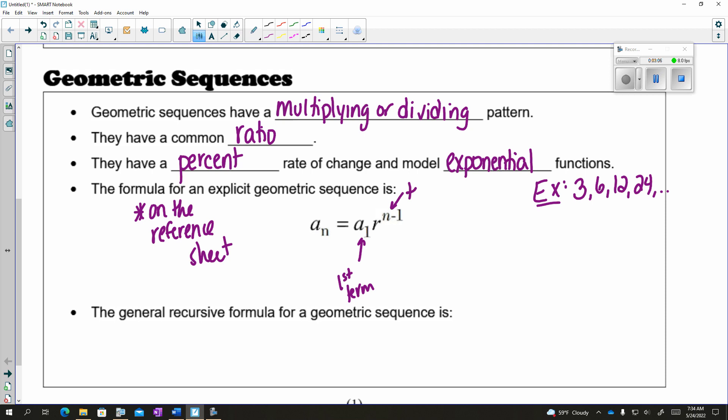N, still the term number, just like before. The only difference here is R, and that's your common ratio.